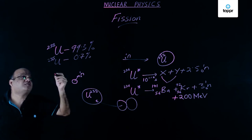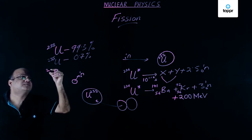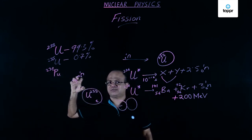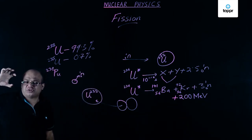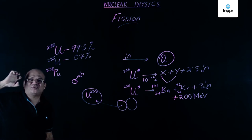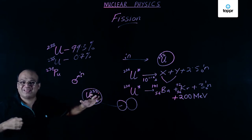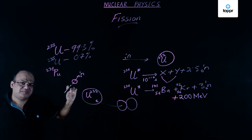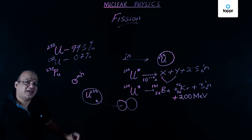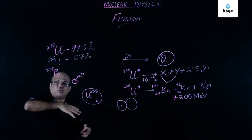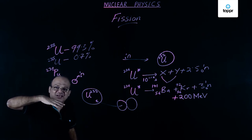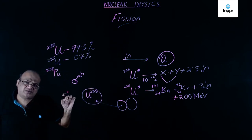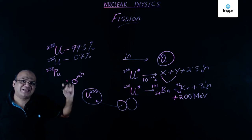Plutonium-239 also fissions with slow neutrons. So in a nuclear reactor we have neutron-absorbing rods of boron steel and moderators — graphite core and heavy water — to slow down neutrons. We also have cadmium rods: cadmium absorbs neutrons and is used for control. If the reaction is getting more violent you dip the cadmium rods in; if it is less violent you take them out. The first nuclear reactor was built at the University of Chicago in 1942.